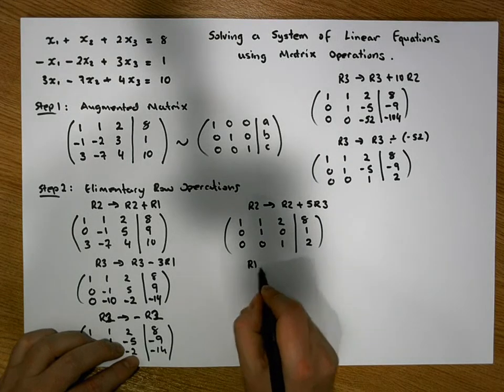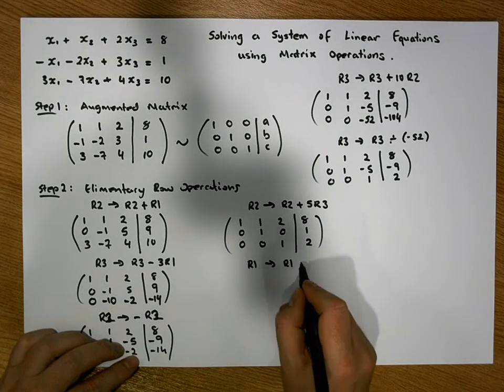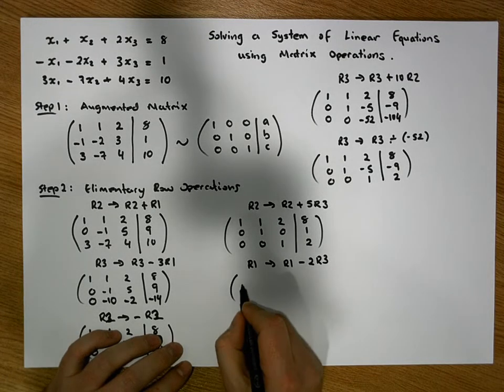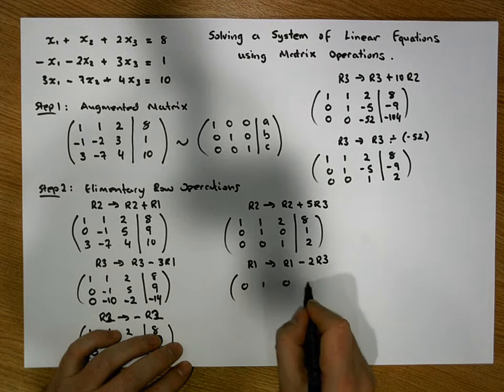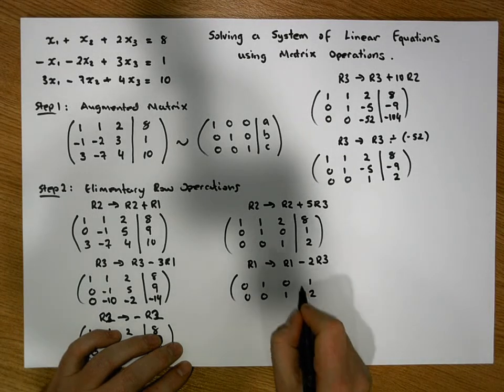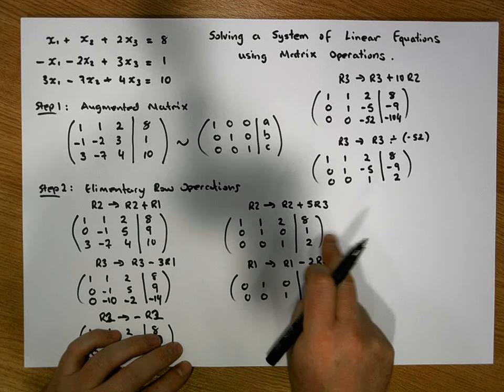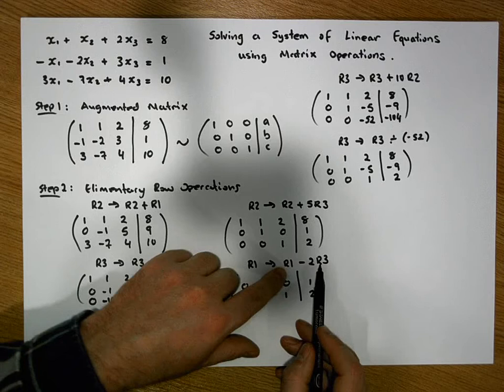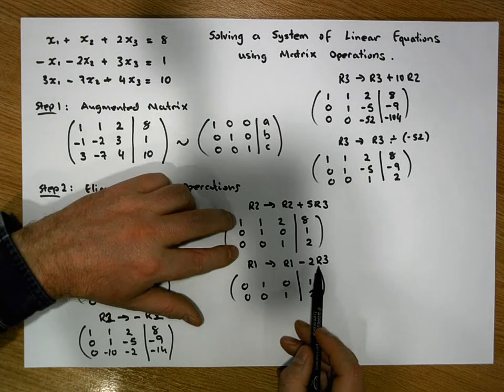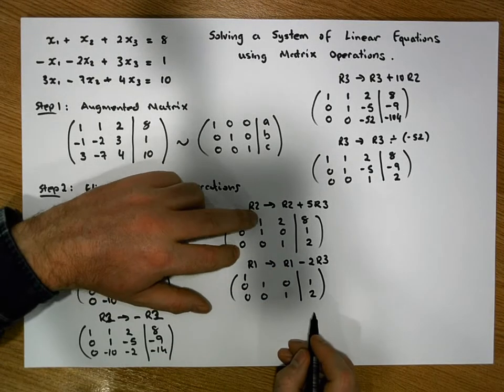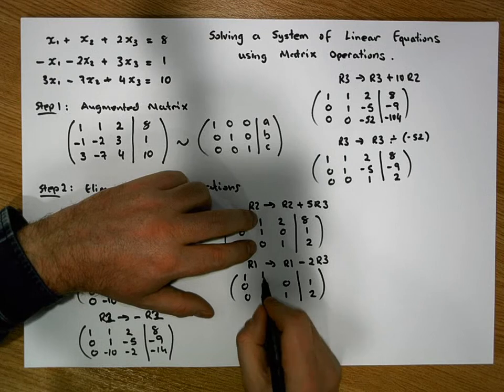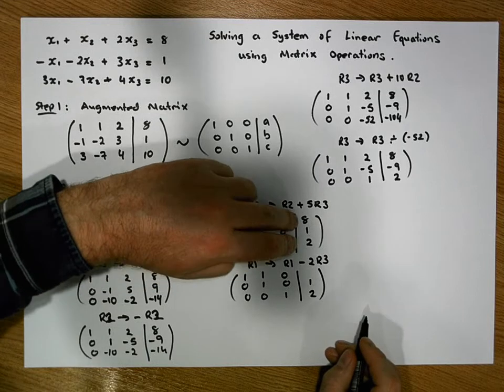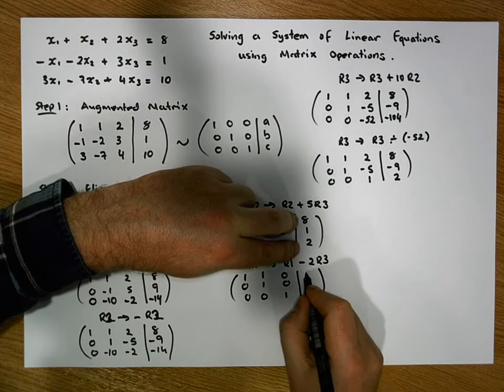We're going to say that row 1 becomes row 1 minus twice row 3. So the update operations, it's going to be 0, 1, 0, 1, 0, 0, 1, 2. We don't change row 2 and row 3, it's row 1 being updated. So it's row 1 entries minus twice row 3 entries. So it's 1 minus twice 0 is 1, it's 1 minus twice 0 is 1, it's 2 minus twice 1 gives us a 0, it's 8 minus twice 2 gives us a 4.